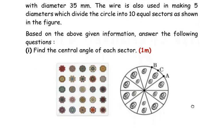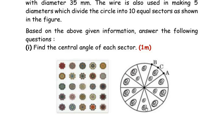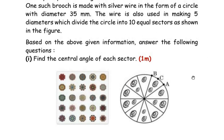The first sub question is: find the central angle of each sector. The brooch is in the shape of a circle with a diameter of 35 mm. Five diameters are drawn, dividing the circle into 10 equal sectors — each sector shaped like a pizza piece. The central angle for all sectors will be the same since the diameters cut the circle into equal parts.